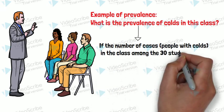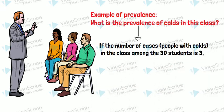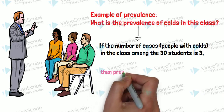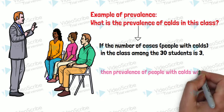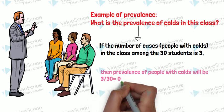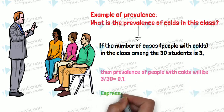The prevalence of people with common cold will be 3 over 30 times 100. It will be 0.1, but if you want to express it as a percentage, 3 over 30 times by 100, it will be 30 percent.